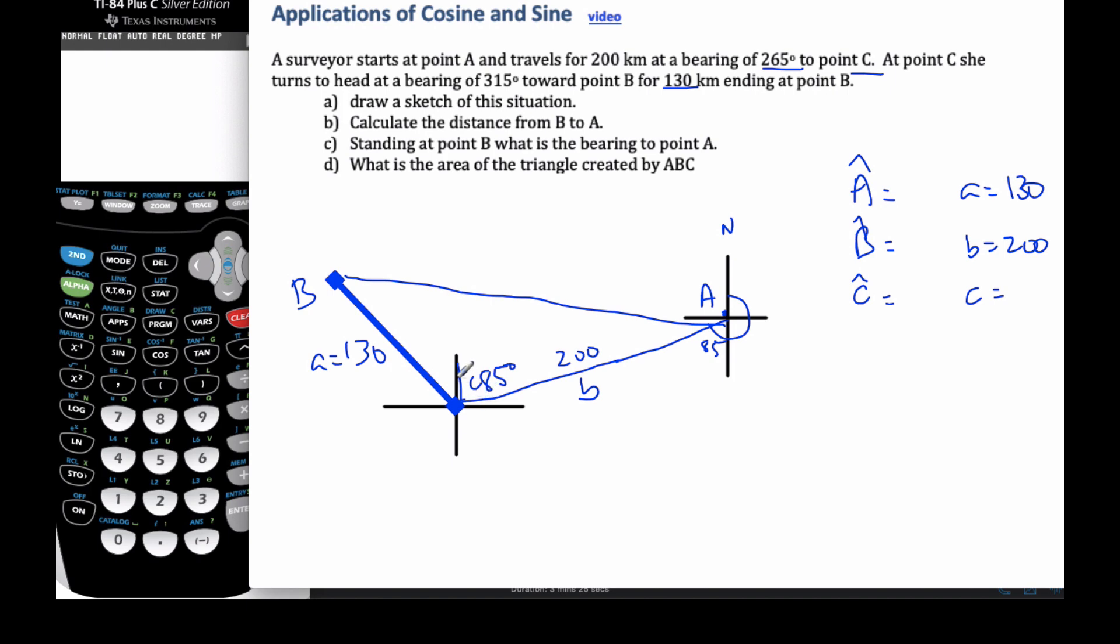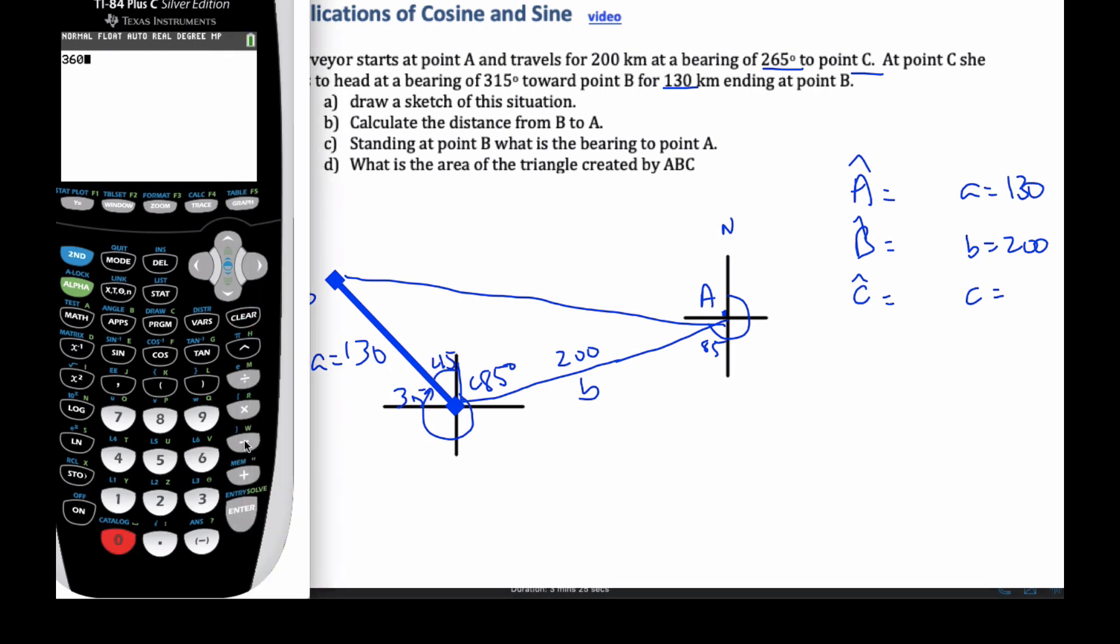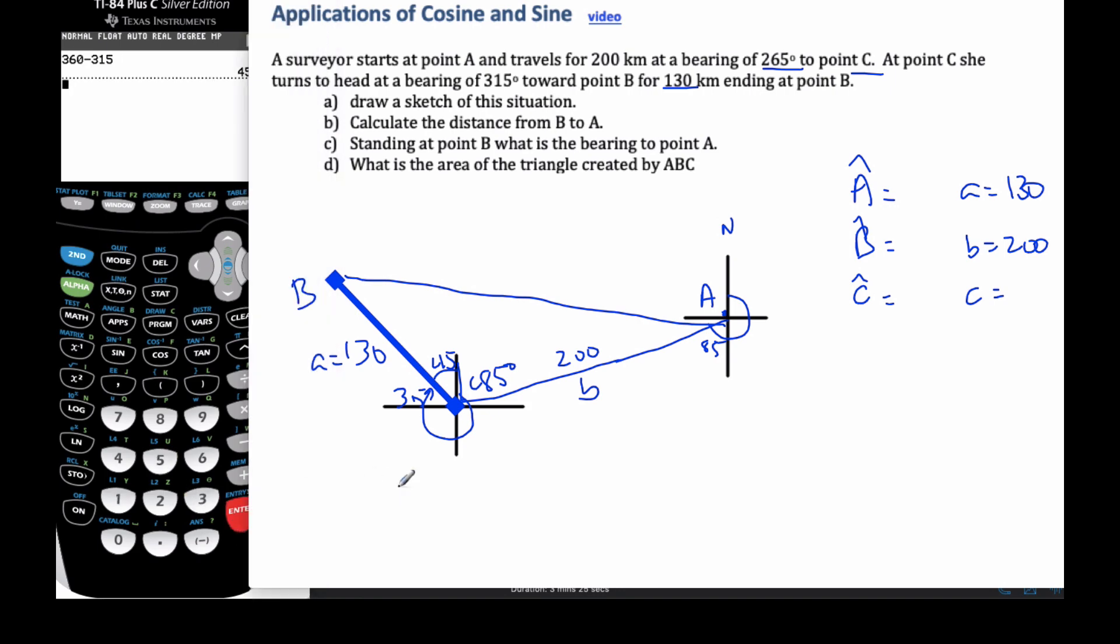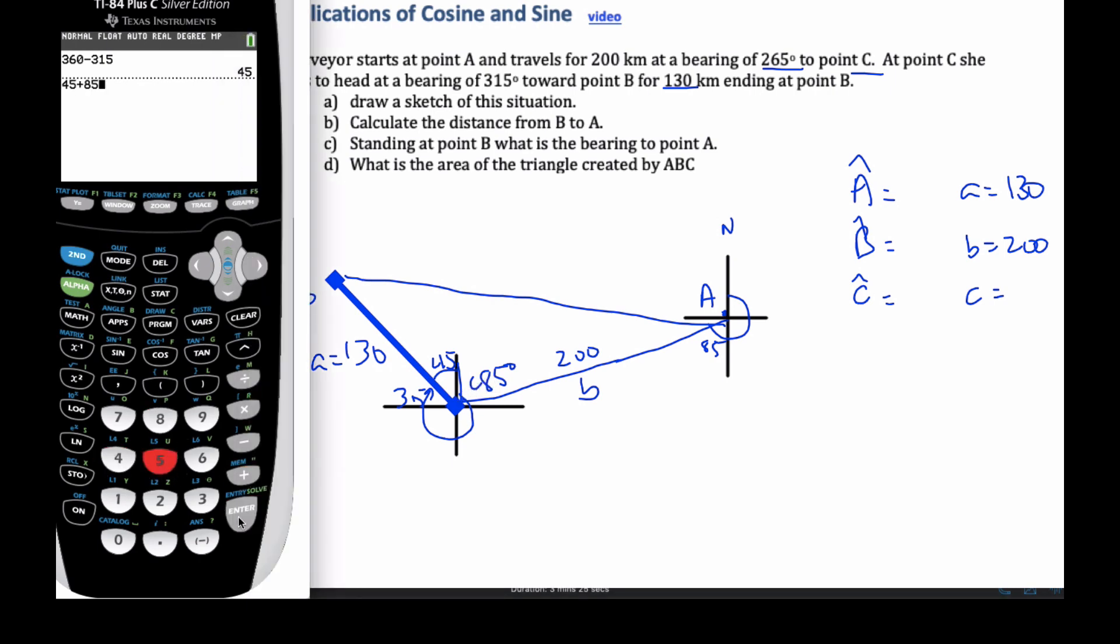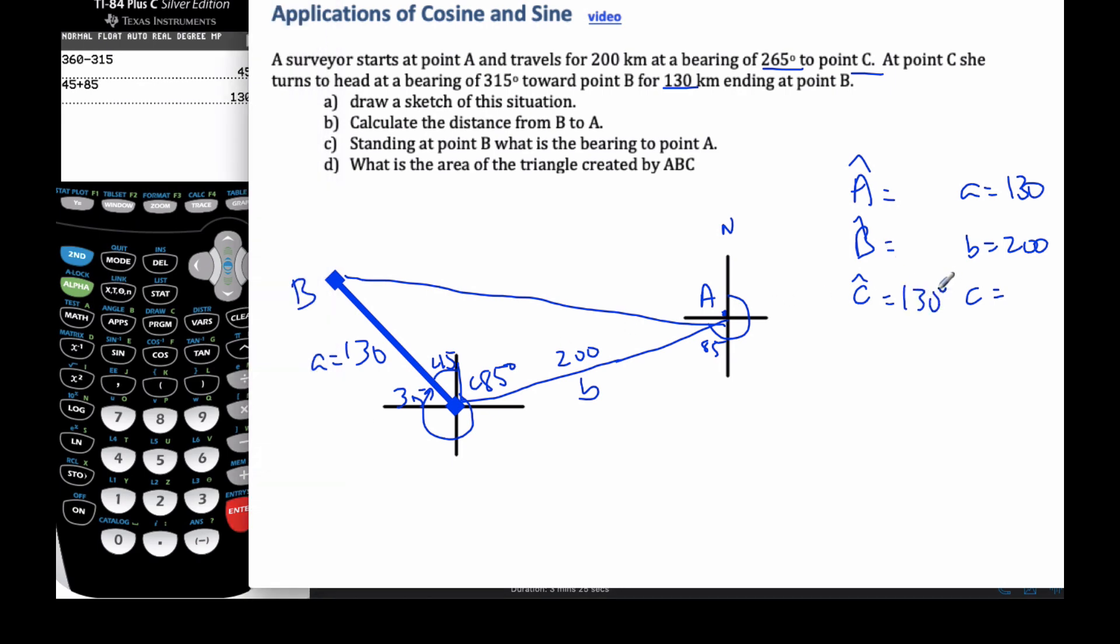And then I went from north all the way around. I went 315. So if this is 315, all the way around is 315. Well, that means this angle here has to be 45. Because 360 minus 315 is 45. So 360 minus the 315 is indeed 45. And so now angle C is going to be 45 plus the 85 is 130 is angle C. This is 130 degrees.